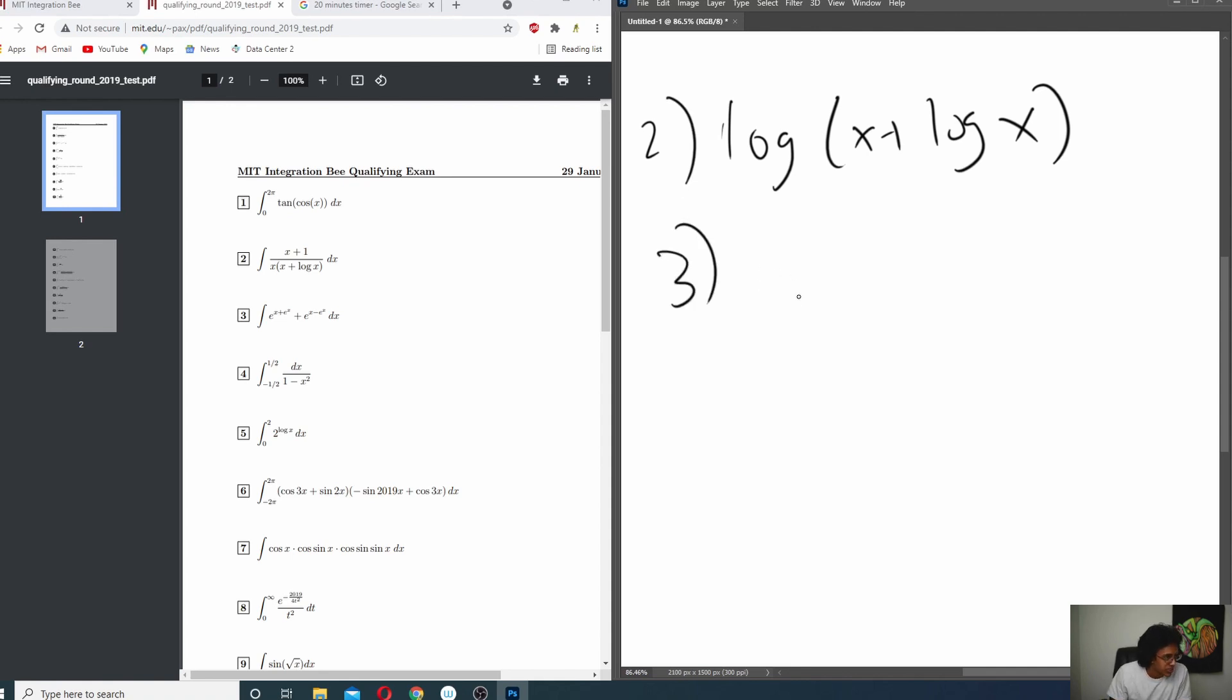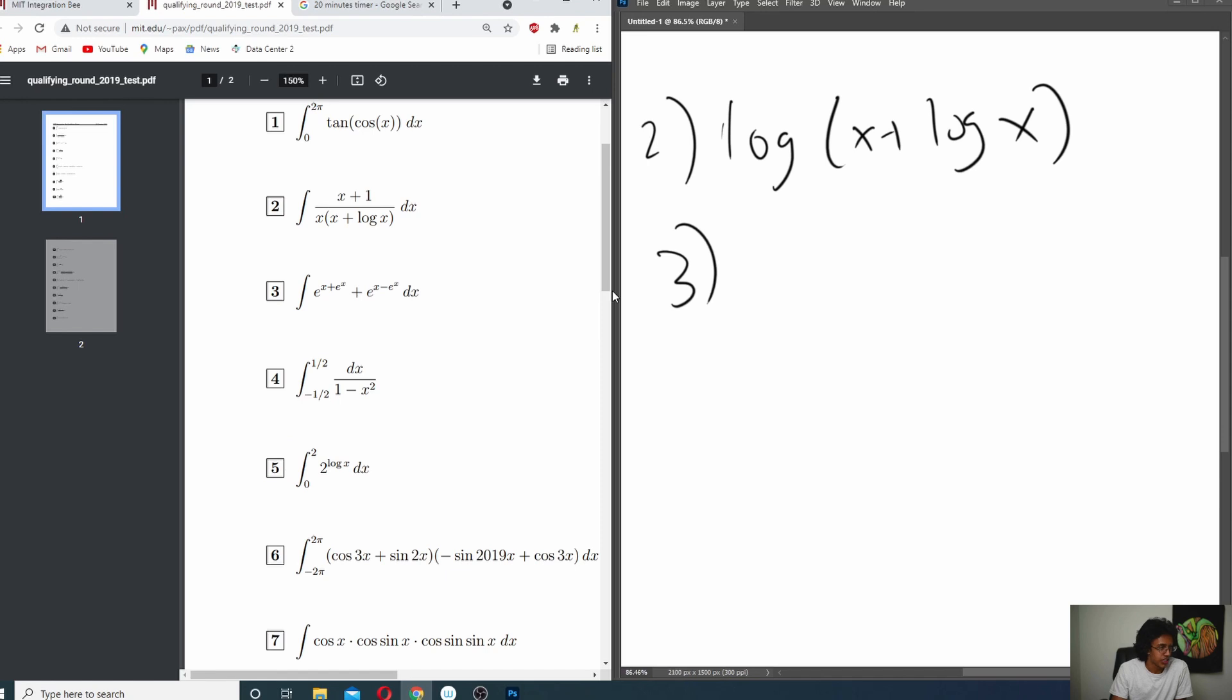Okay, 3. e to the x plus e to the x, wait, let's zoom in. That's tiny. Plus e to the x minus e to the x. Okay, the cool thing about e to the x is that if you take the derivative of e to the x, you get e to the x. So that's nice, but how does that even help? Um, well, okay, let's just think about what happens if we do like e to the x plus e x, and we take the derivative of that. Then we basically get e to the x plus e to the x times 1 plus e to the x.